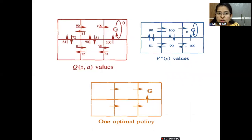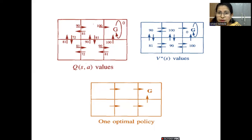Looking at each block: in state one, the available values are 81 and 90 — the maximum is 90. In state two (goal-adjacent), the maximum value is 100. In state four, the maximum value is 81. In state five, the maximum value is 90. In state six, the maximum value is 100. These maximum values are selected for the optimal control policy.